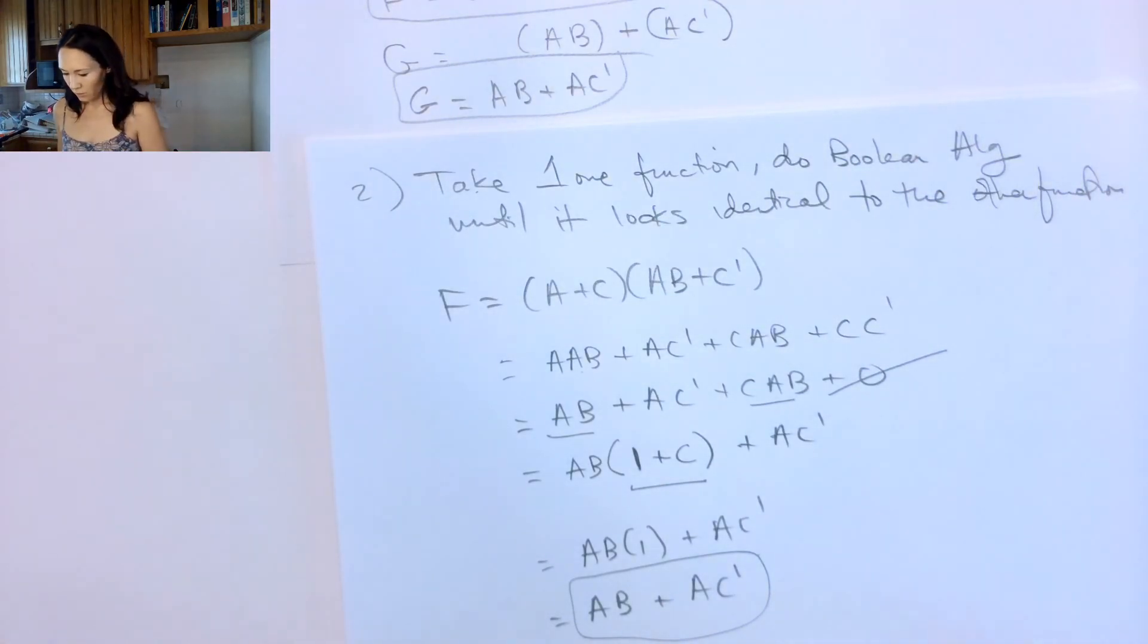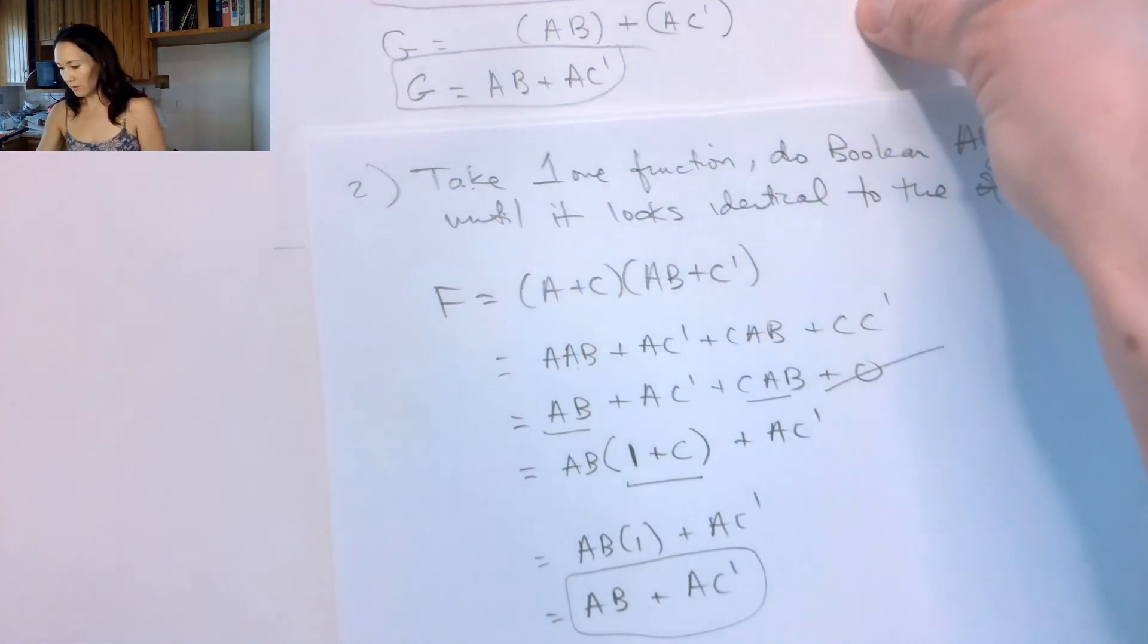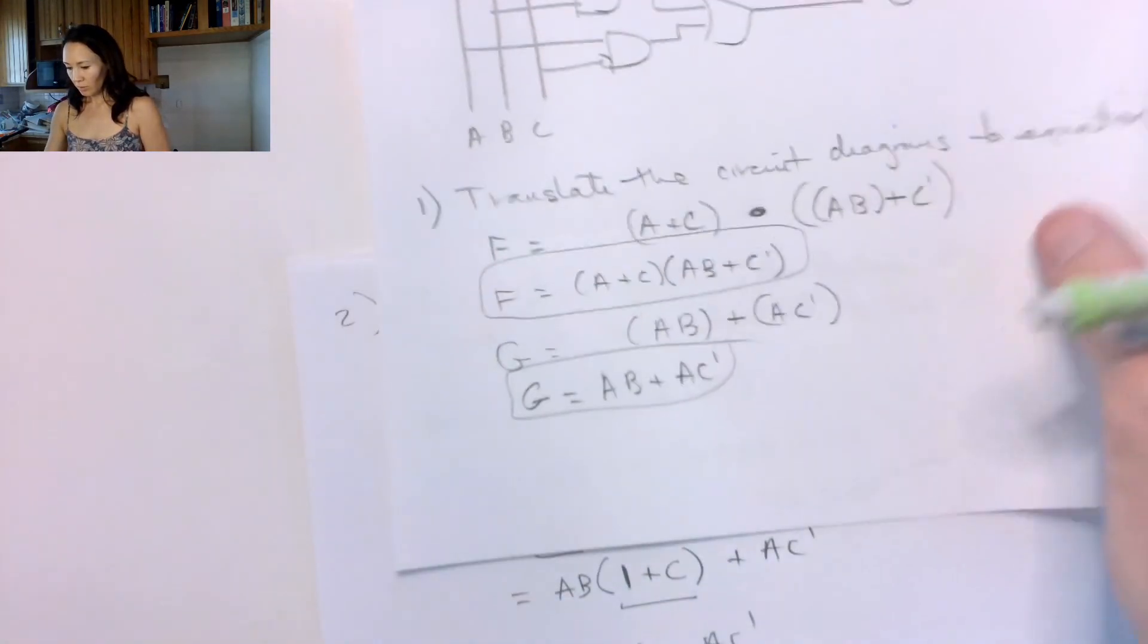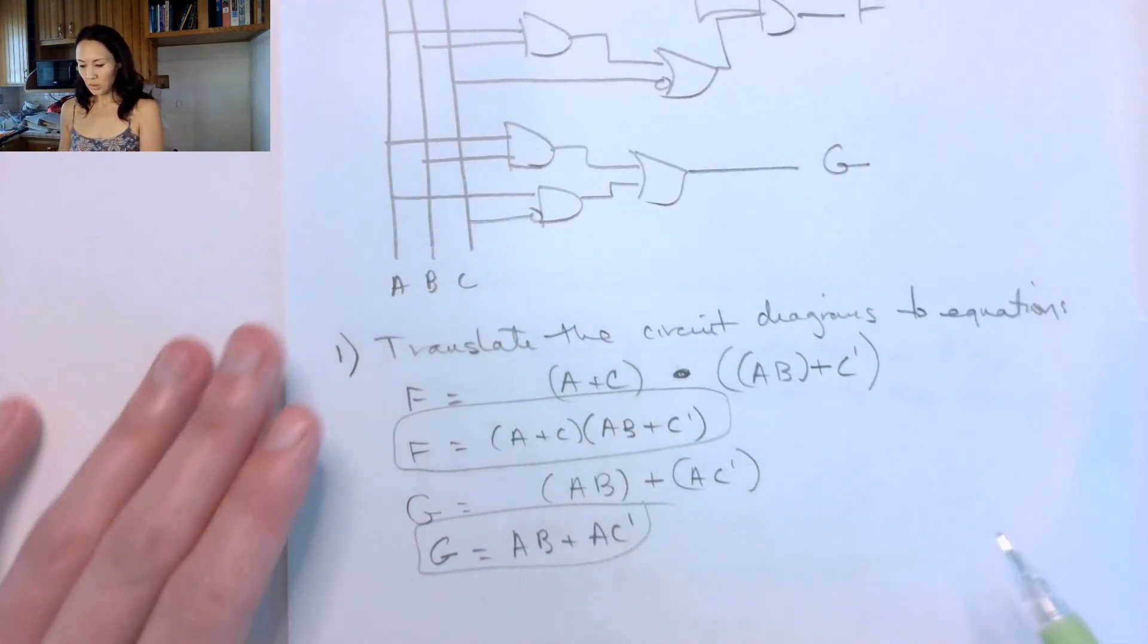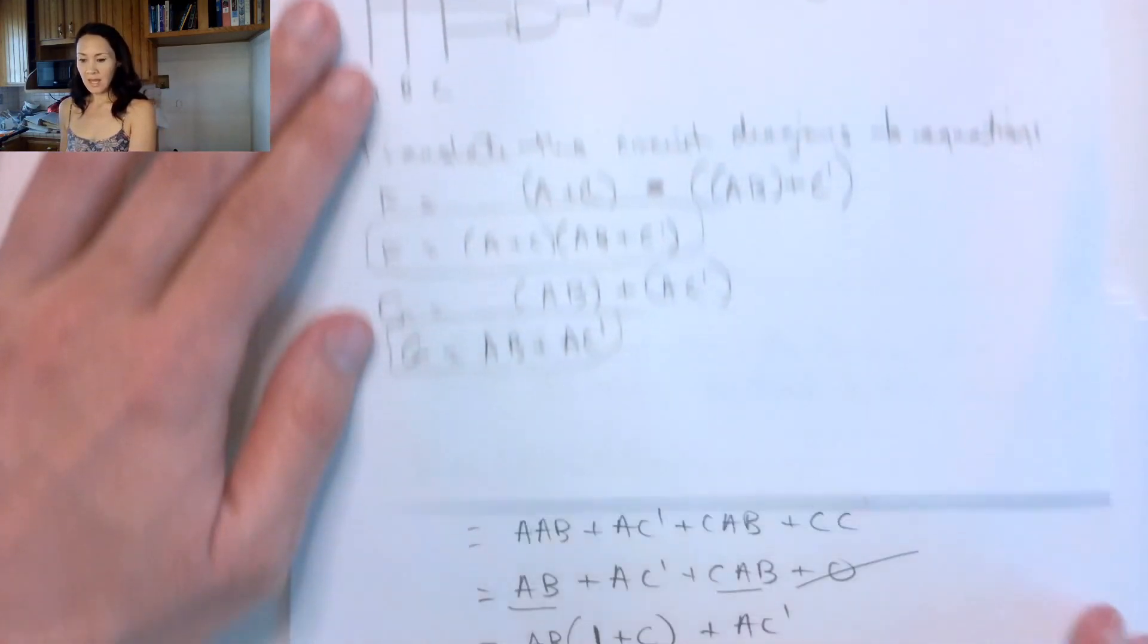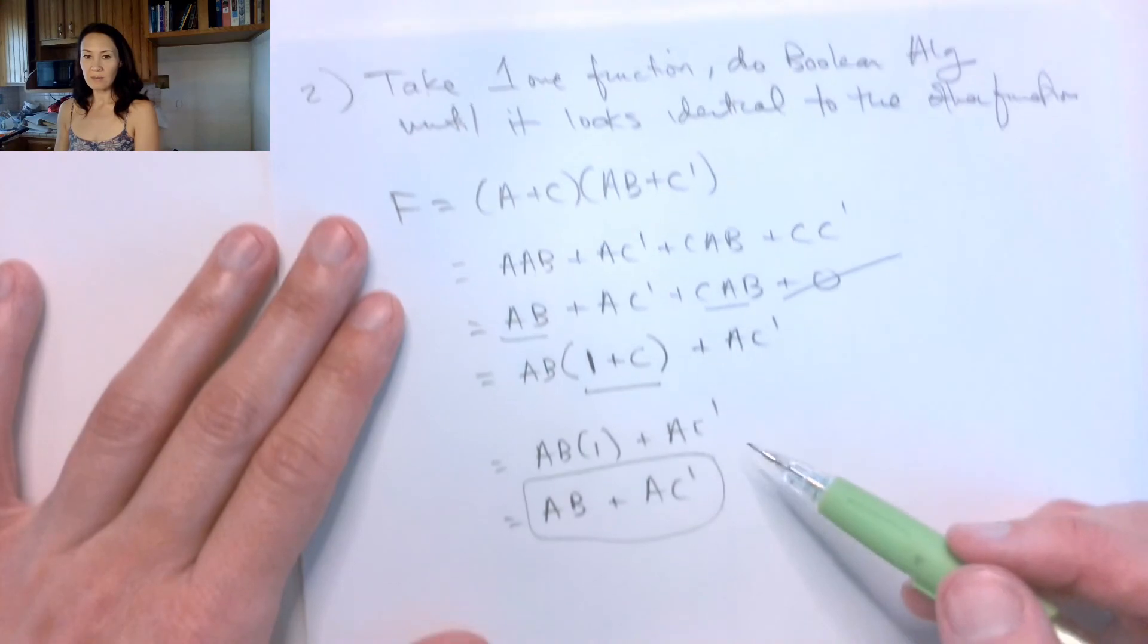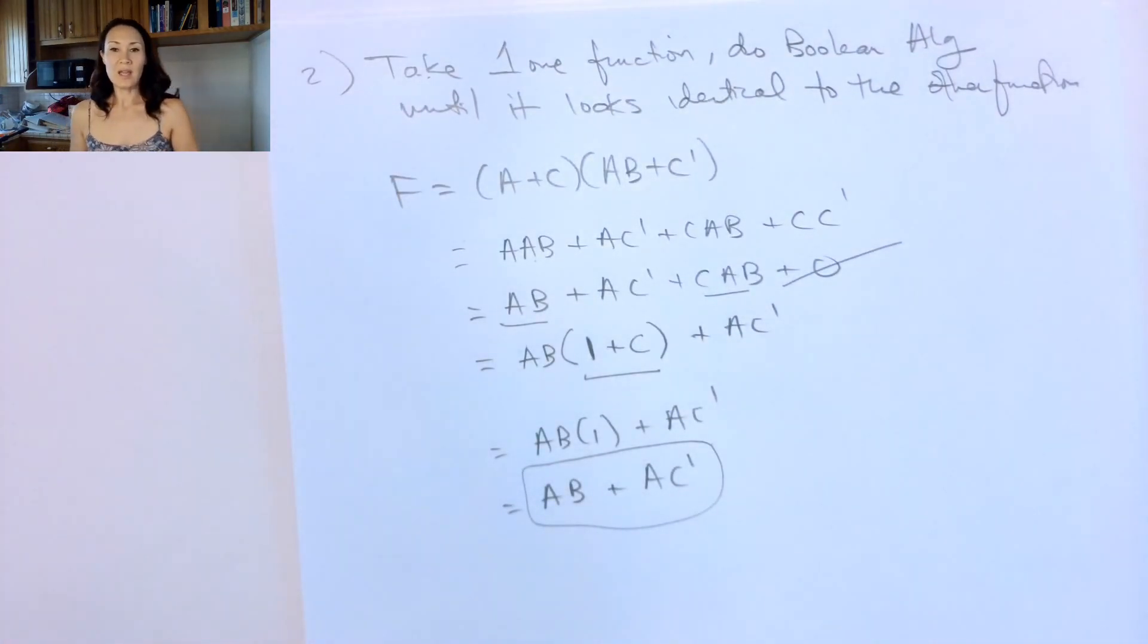So if you have any questions about this, the process is looking at the gate array. We first make our equations and then we pick one of them, and we do Boolean algebra to make it look like the other one. And then we're done.